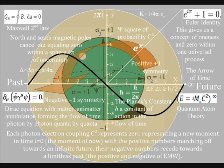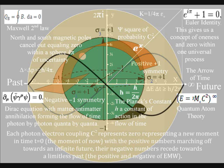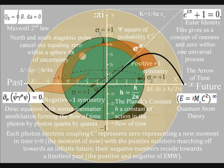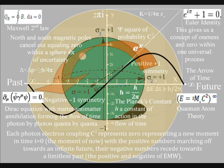The electric fields will always be at right angles to the magnetic fields, because the momentum of light will always be at right angles to the surface of the sphere. This is represented on the diagram by the imaginary numbers being at right angles to the real numbers.